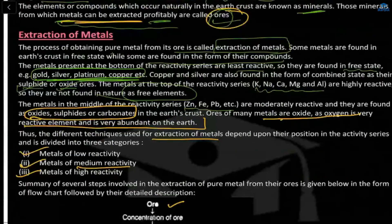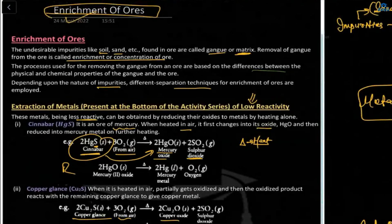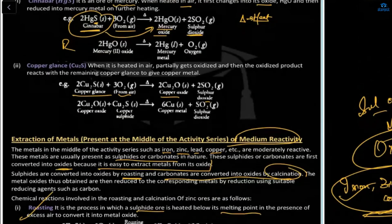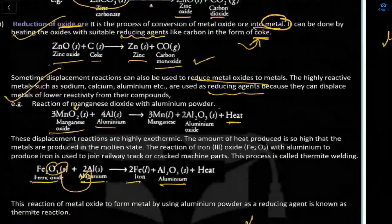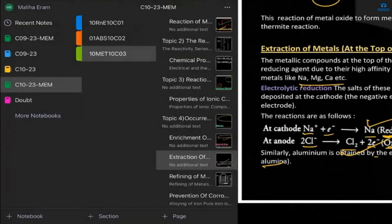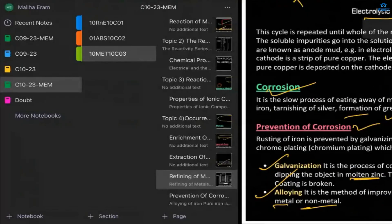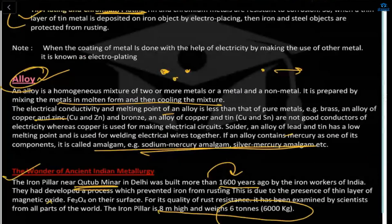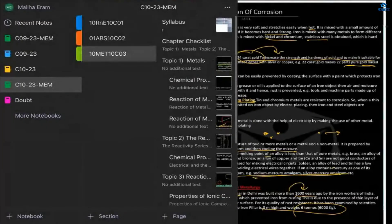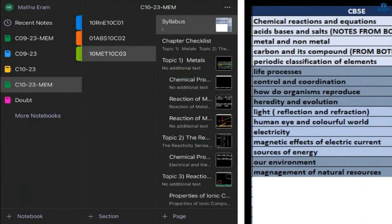Today we discussed the occurrence of metals, extraction methods based on low, medium, and high reactivity, enrichment of ores (removing impurities/matrix), roasting, calcination, displacement method, electrolysis, electrolytic refining, and corrosion prevention through galvanization, alloying, painting, greasing, and plating. Next we will start the chapter on carbon and its compounds.